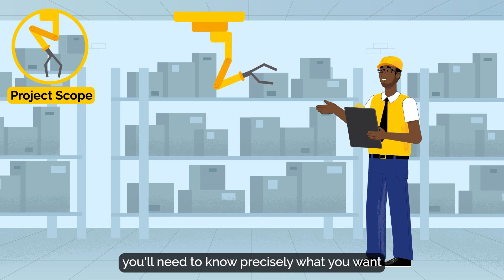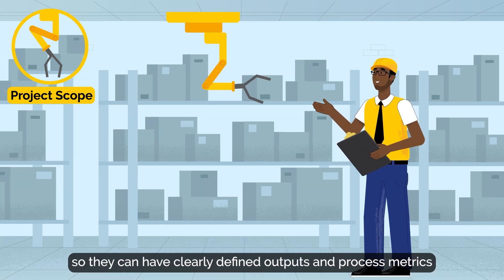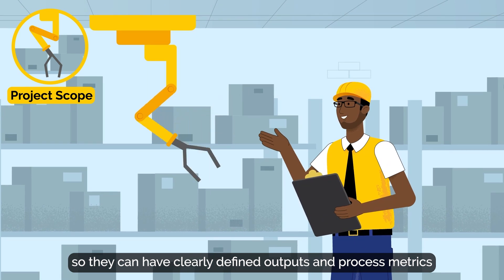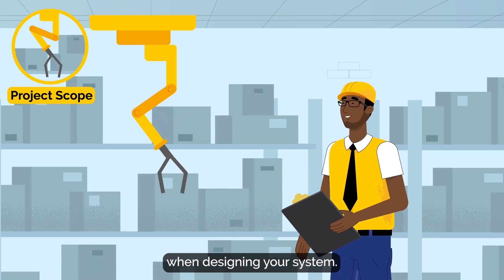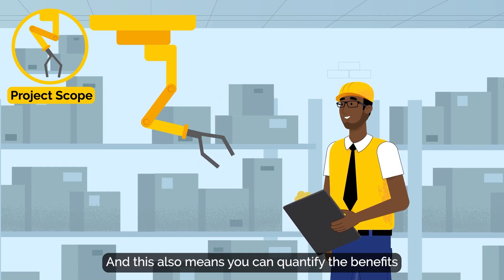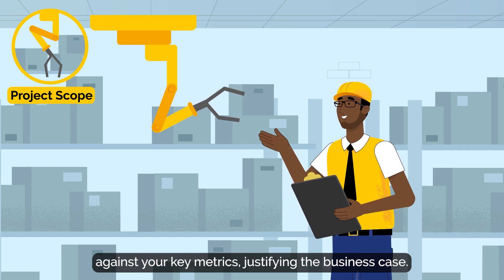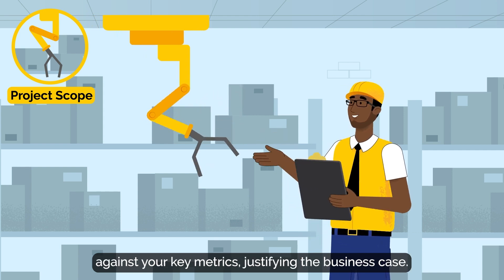You'll need to know precisely what you want before moving ahead with a tech supplier, so they can have clearly defined output and process metrics when designing your system. This also means you can quantify the benefits against your key metrics, justifying the business case.